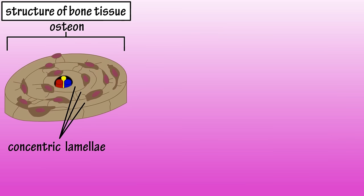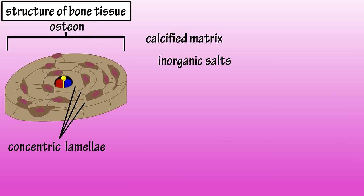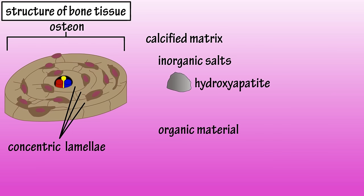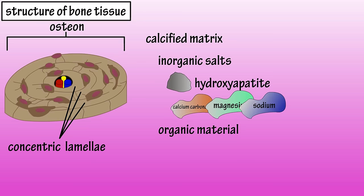The lamellae are composed of calcified matrix, and this matrix is comprised of inorganic salts and organic material. The inorganic matrix is made up of rock-like crystals of calcium and phosphate called hydroxyapatite crystals. Calcium carbonate, magnesium, sodium, sulfate, and fluoride are also found in bone material.